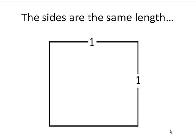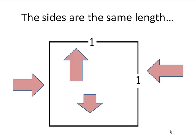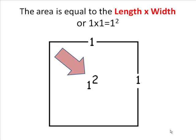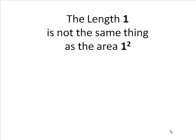This is a square. The sides are the same length. The corners are all 90 degrees. The area is equal to the length times the width, or in this case, 1 times 1 is equal to 1 squared. The length 1 is not the same thing as the area 1 squared.